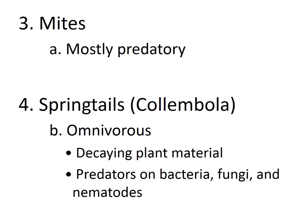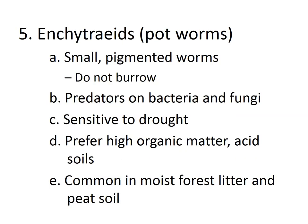Mites are mostly predators. Springtails are omnivores responsible for decaying plant material and can prey on bacteria, fungi, and other nematodes. Enchytraeids, or pot worms, are small pigmented worms that don't make burrows. They are usually predators on bacteria and fungi but are sensitive to dryness — their numbers decrease greatly under dry conditions. They prefer soils with high organic matter and acidic conditions, and are common in moist forest litter and peat soil.